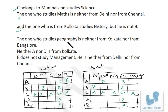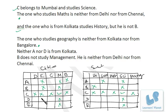Statement: The one who studies Geography is neither from Kolkata nor from Bangalore. Also, neither A nor D is from Kolkata. This means E must be from Kolkata, so we can mark that and cancel all other city options for E.